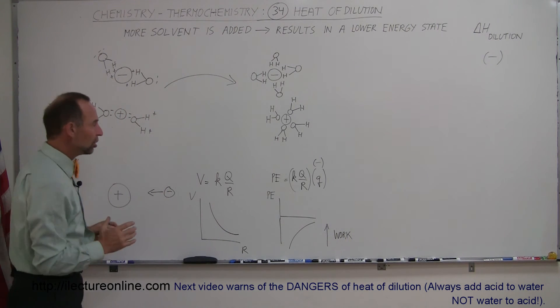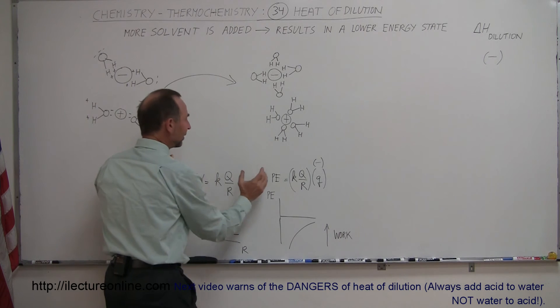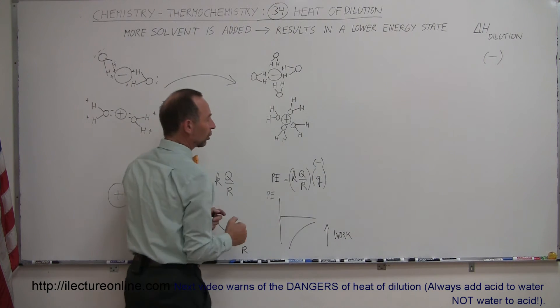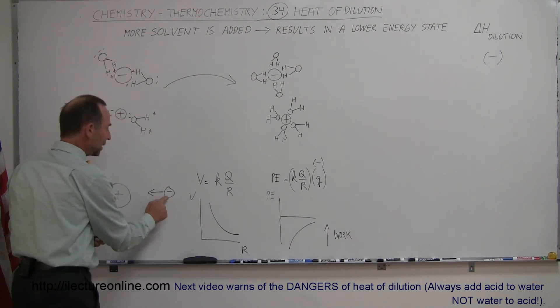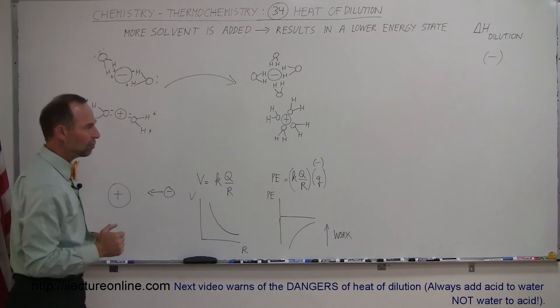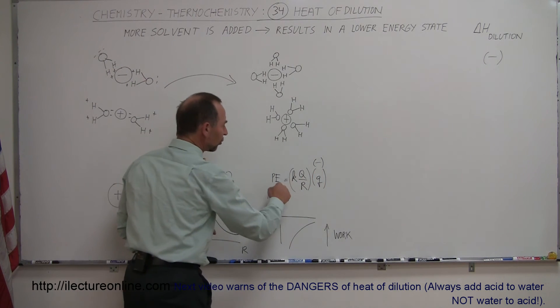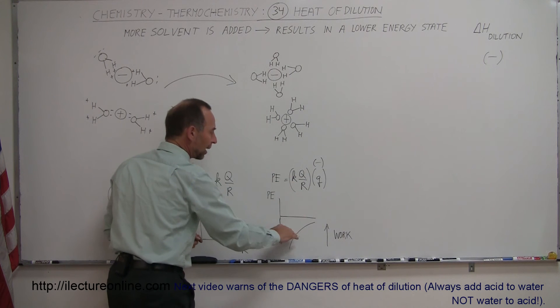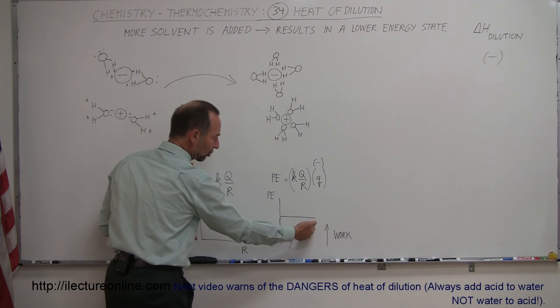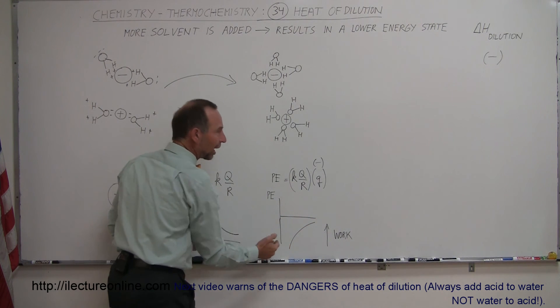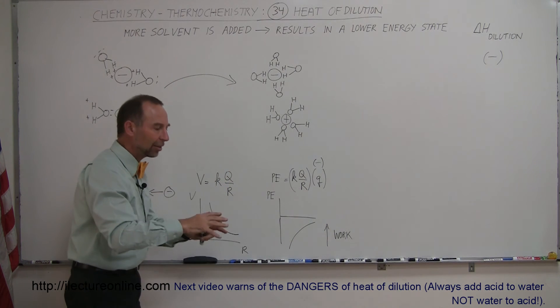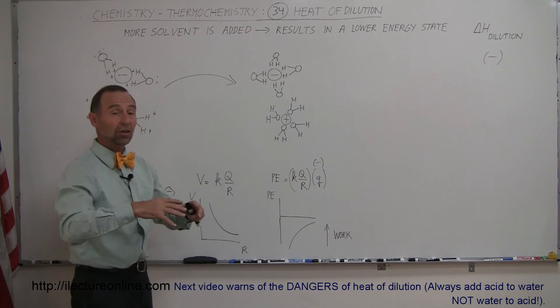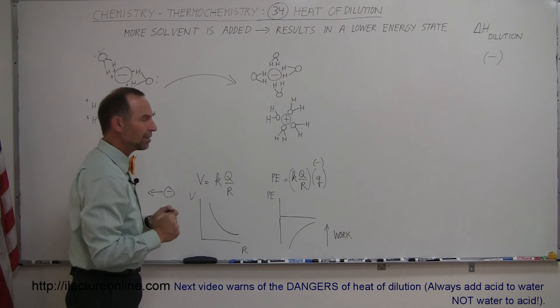And notice the charge you bring in closer is going to be a negative charge, which means as you bring a negative charge in closer, the potential energy is going to go down just like this. So as you bring the charge in closer, the potential energy goes down. So you get less and less potential energy. Where does that potential energy go? It gets expelled and turns into heat.